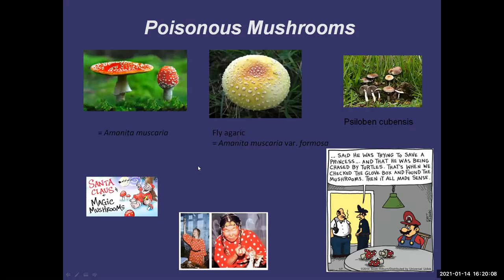These are fly agaric. The variety most common on the West coast is the red one, and on the East coast we more commonly have a yellowish variety — the formosa variety. They are magic mushrooms, but not the same as psilocybin mushrooms. I don't recommend eating these for recreational purposes because there's a toxin in them — muscarinic acid — that will make your heart race and you'll salivate and be nauseous and probably be hospitalized. People who are into this recreationally know how to process them to reduce the toxins.